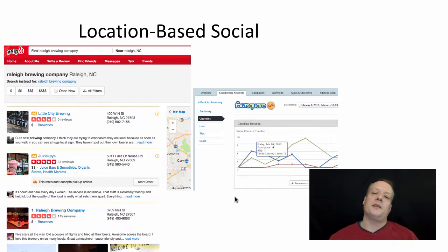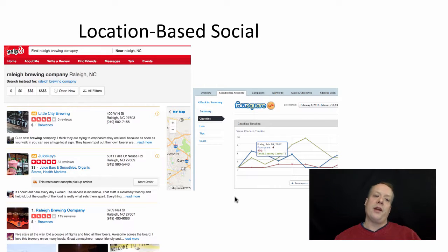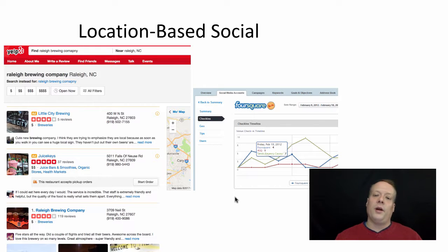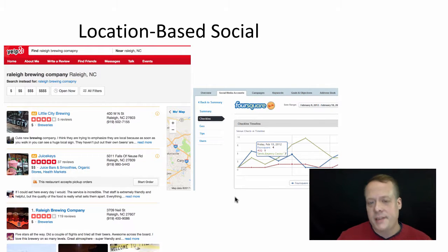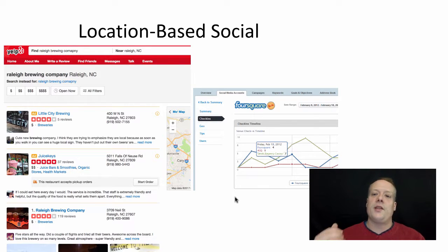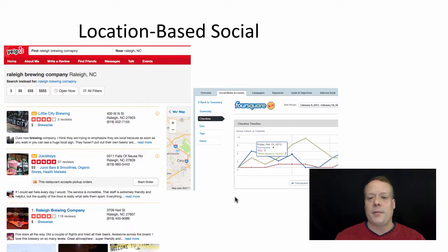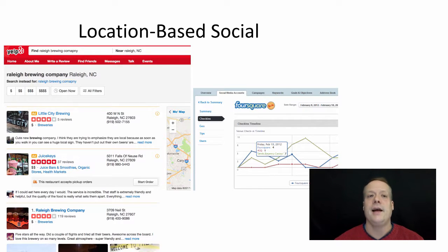Another great location-based app is Foursquare, also called Swarm — they actually split at one point. Foursquare is essentially now the app that gives you reviews, kind of a competitor to Yelp. Swarm is a check-in app that allows users to check in at different locations. From a manager's perspective, if you take control of your location there, you can get insights into when people are visiting, and whether one of your regulars hasn't been back in a while. It provides insight that you'd normally only get through a loyalty program. That's all the different channels — in the next video we'll talk more about how you use those channels and analyze them.